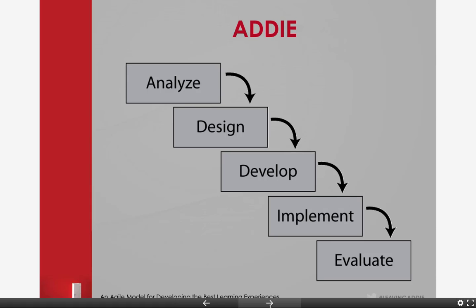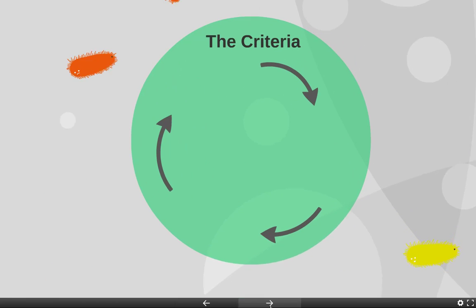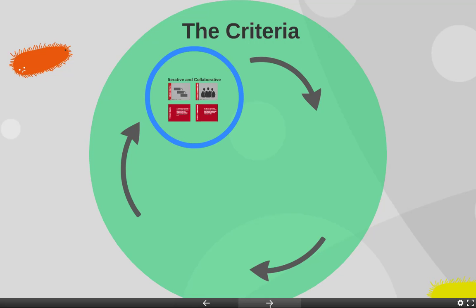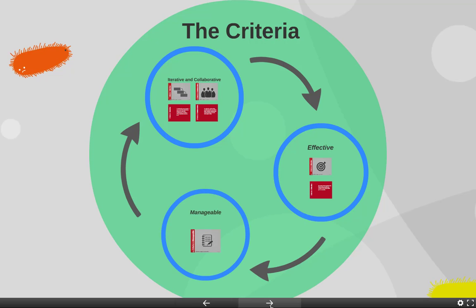And hence, this would be the causation for other models to come out, one of those being the Successive Approximation Model. There are some criteria involved with the Successive Approximation Model. The first two would be iterative and collaborative. Moving into that third criterion being effective — you want to make sure that this stuff is effective. And then, of course, you want to make sure that it's also manageable.